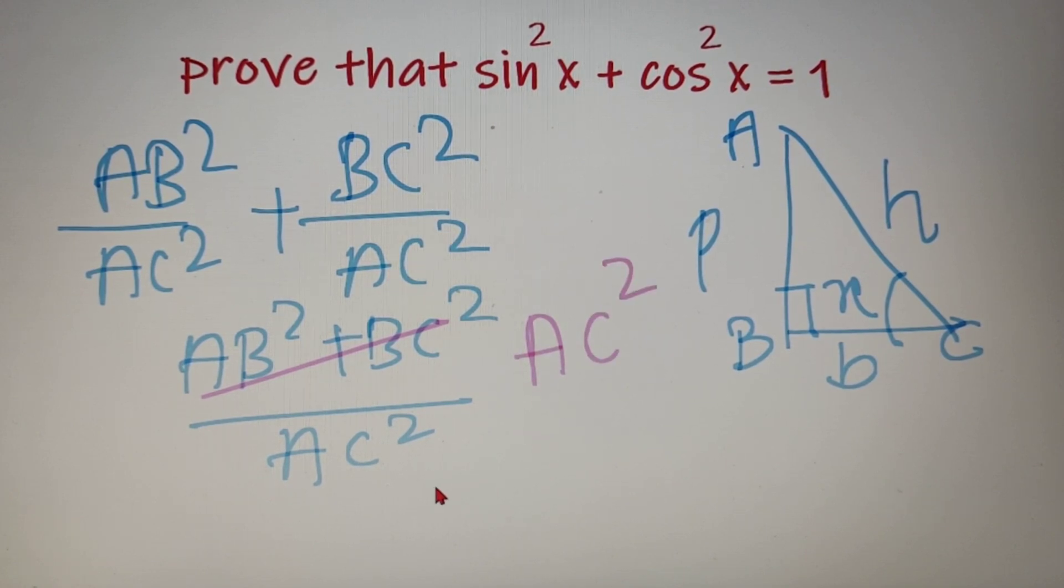Now I have AC square in both numerator and denominator, so they will cancel out and I will get the answer as 1. So sine square x plus cos square x is indeed equal to 1.